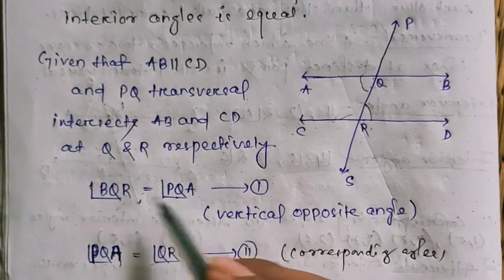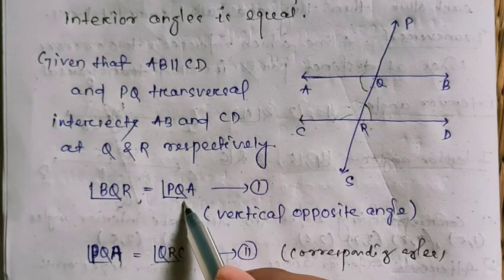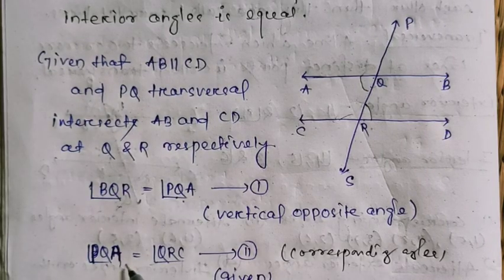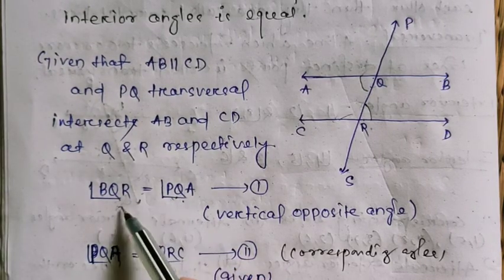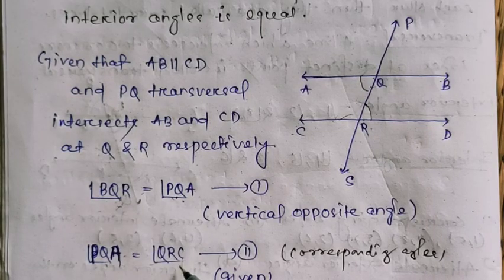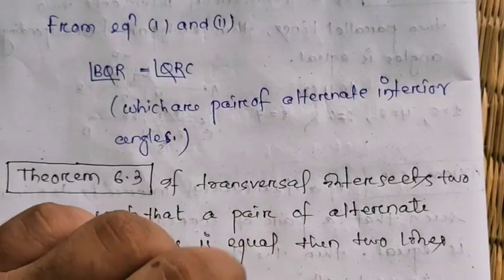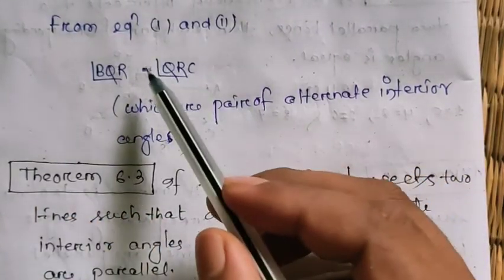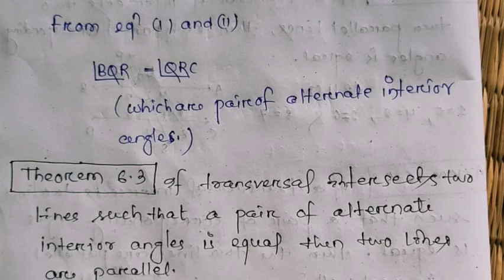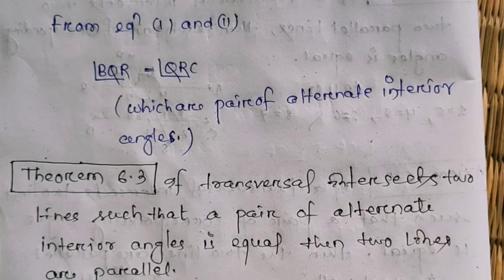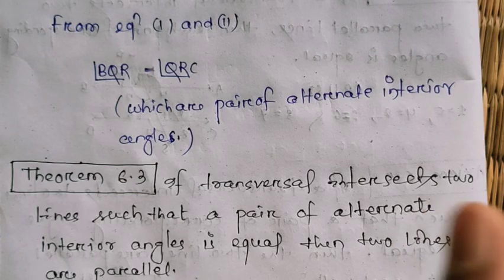Theorem 6.3 states the converse: if a transversal intersects two lines such that a pair of alternate interior angles is equal, then the two lines are parallel. If this angle equals this angle — for example, both are 45 degrees — then we can say the two lines are parallel. If even one pair of alternate interior angles is equal, the two lines are parallel.